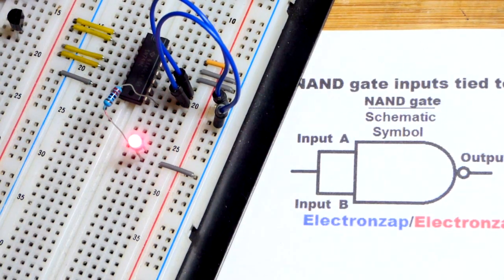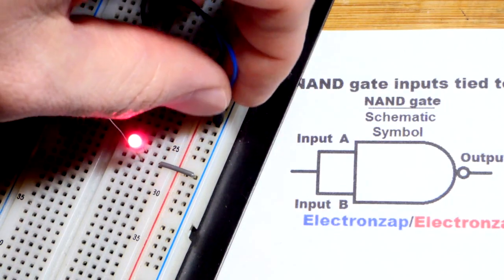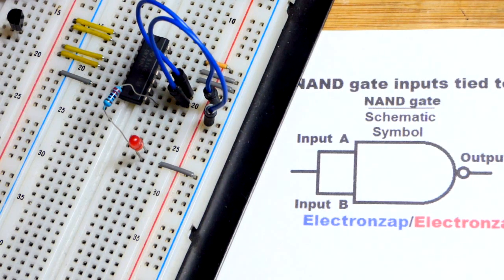We have both jumpers to the negative rail. I have to put both of them. I can move one or the other to the positive, but they both have to be to the positive rail for the LED to turn off.